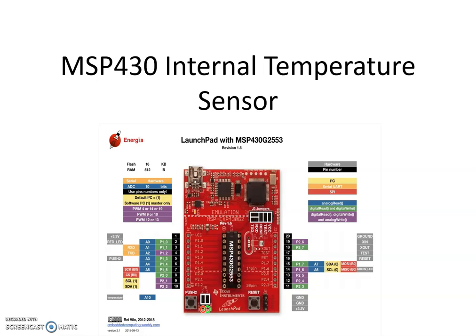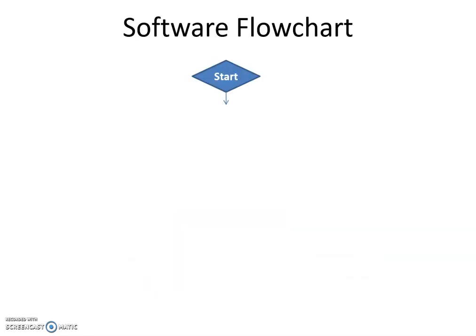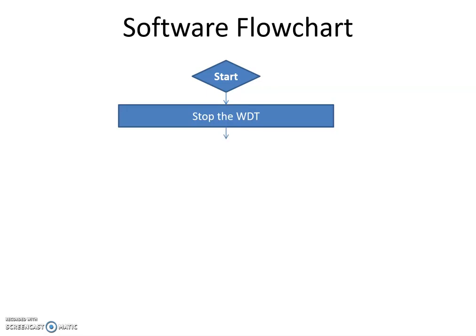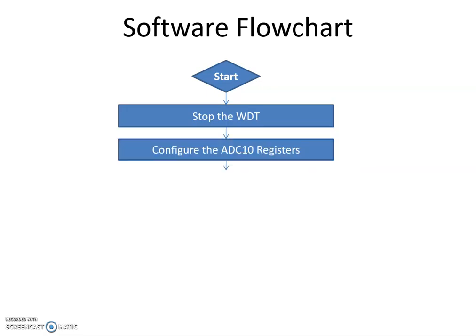Let's see the software flowchart quickly. First of all we start — we don't need the watchdog timer so we simply stop it. We have to configure the ADC10 registers, which are the ADC10 CTL0 and CTL1 registers. I've covered in depth how we go about doing that, so just assume that right now we simply have to configure them, and let's see how to do that in detail a little later.